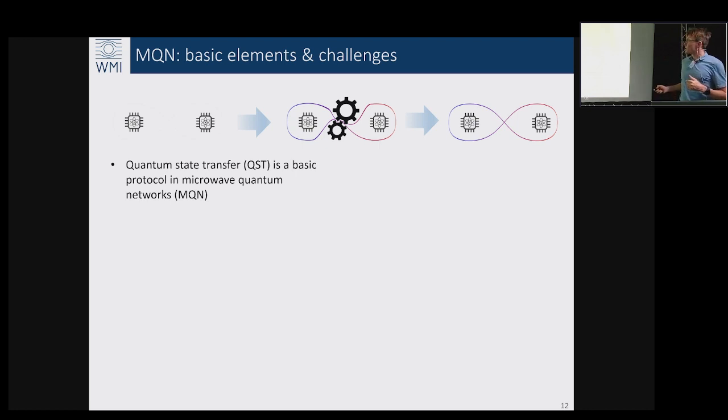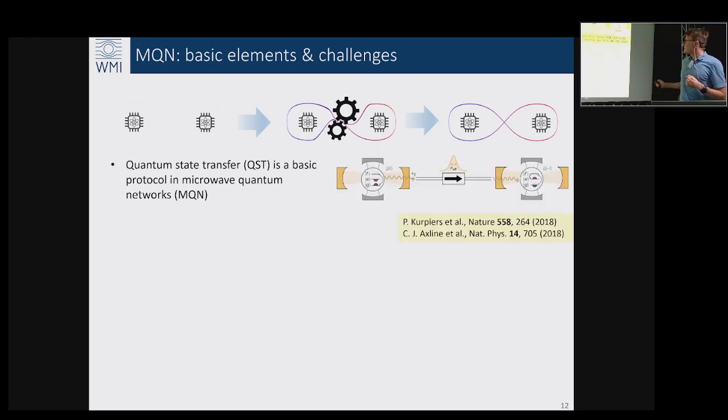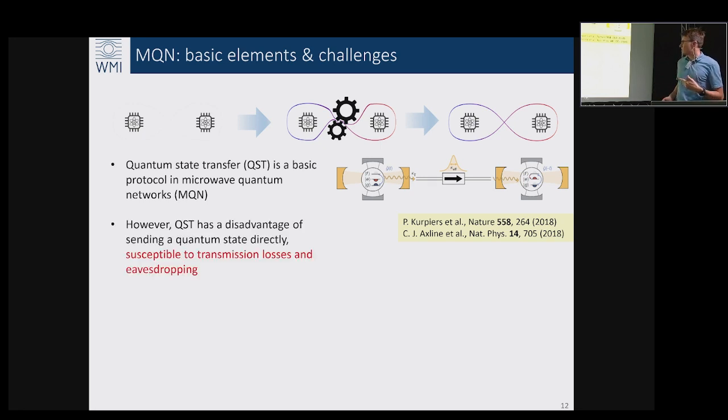One way to distribute entanglement between local systems is to use the very well known quantum state transfer protocol, which in the microwave range has been covered in these papers. It works in a straightforward way: you have two qubits, superconducting qubits in separate cavities, then you make one qubit emit a photon by exciting it first and then you make another qubit catch this photon. Then entanglement will be established between these qubits if you do everything correctly.